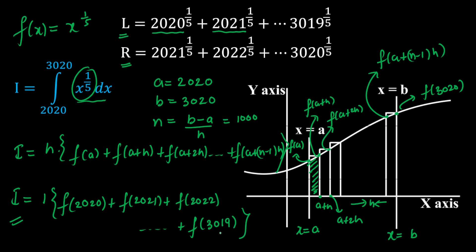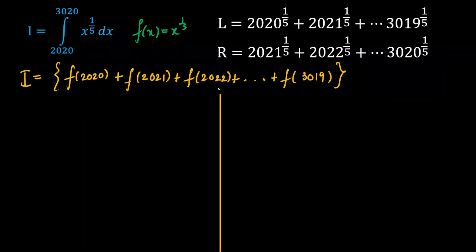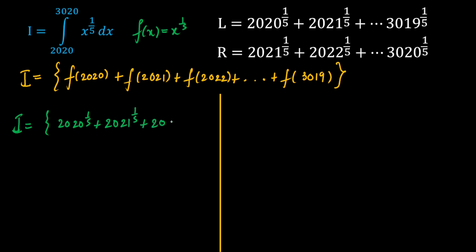Writing I as a sum of fifth root terms using the first principle, and substituting f(x) = x^(1/5), we get I = 2020^(1/5) + 2021^(1/5) + 2022^(1/5) + ... + 3019^(1/5).